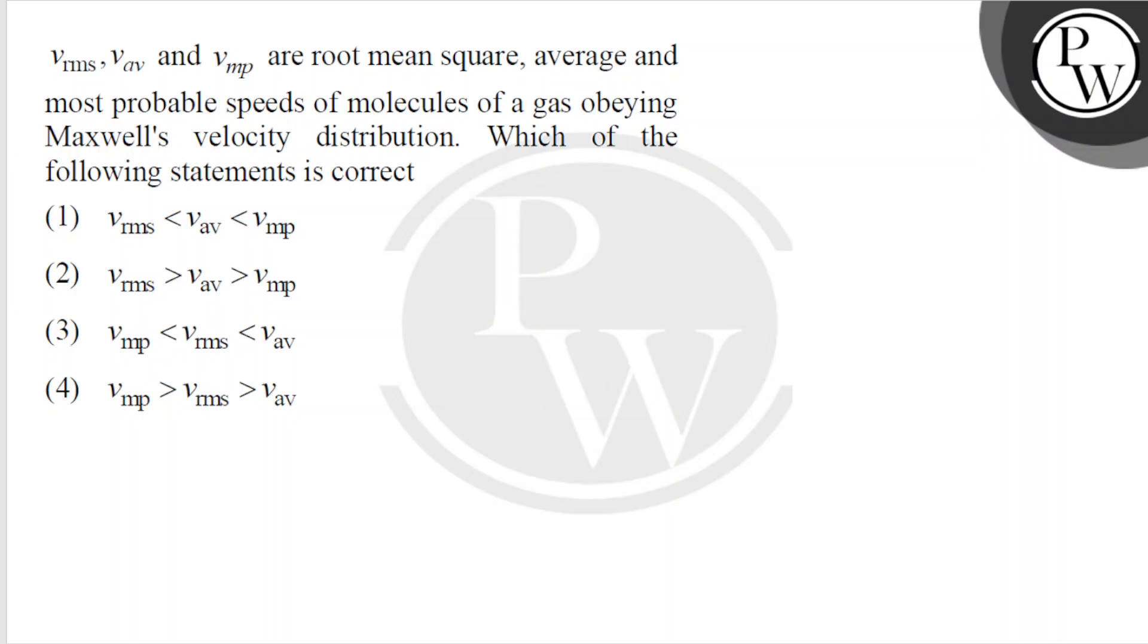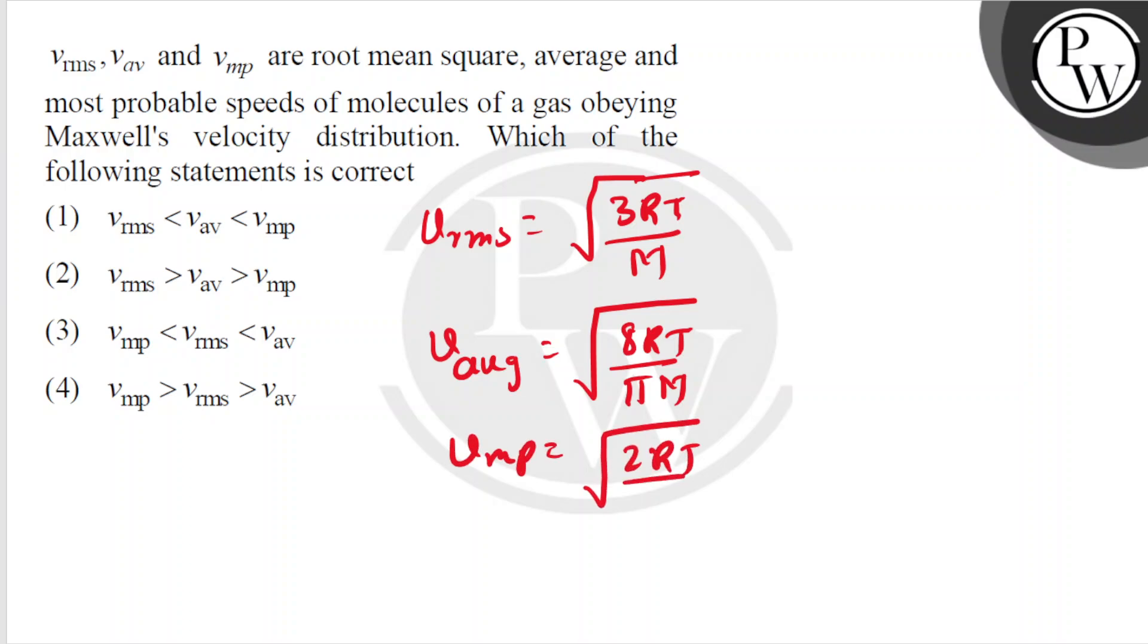Let us see. vrms value is square root of 3RT by M. vaverage is square root of 8RT by pi M. And vmost probable is square root of 2RT by M.